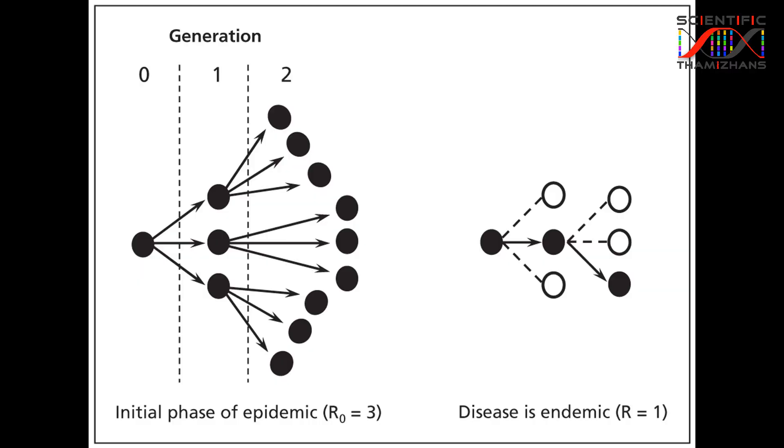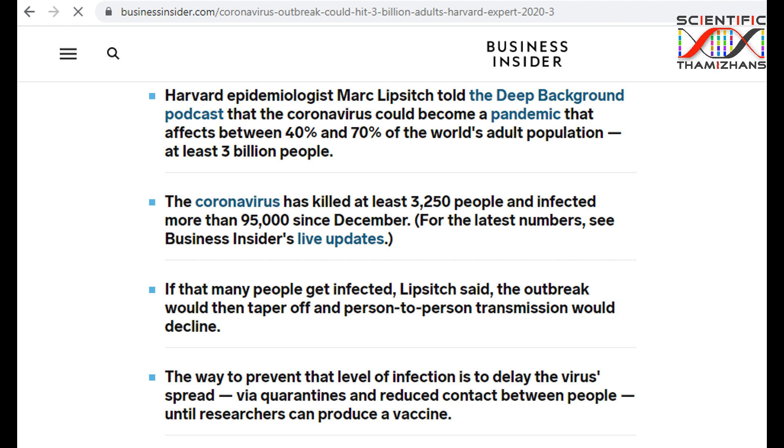Regarding transmissibility, the R0 factor for this coronavirus is still being studied. Measles has an R0 of around 7-8. This coronavirus has an R0 of approximately 1.5 to 3.5. Research from Harvard University suggests that if unchecked, around 15% of the adult population could potentially be infected.